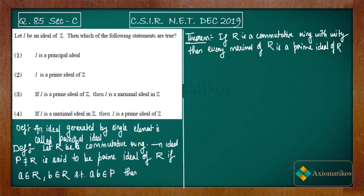Definition one: an ideal generated by a single element is called a principal ideal. Definition two tells us that if R is a commutative ring — there is a misprint, let me correct it. Let R be a commutative ring.